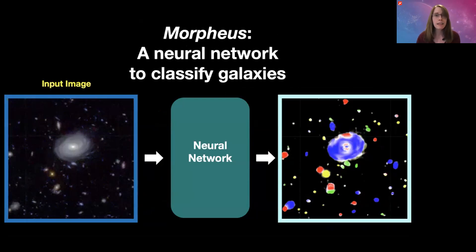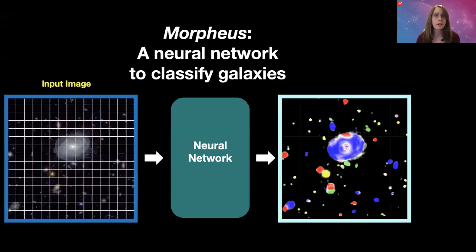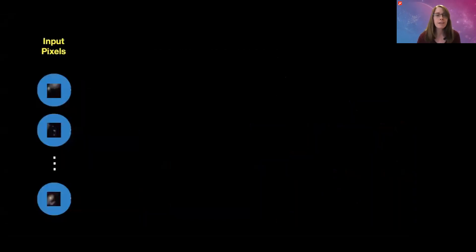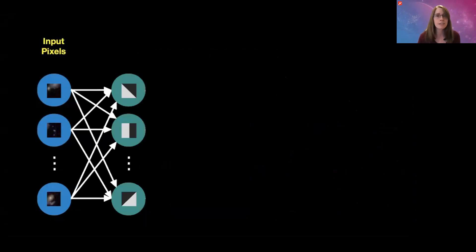They would start with the image that they want to classify galaxies in, the input image, and then they would divide it up into lots of little pieces, little pixel patches, just a few pixels at a time, and feed each of those patches into the neural network. The first thing that it's going to do is search each of those little patches and look for just the simplest pattern possible - just edges.